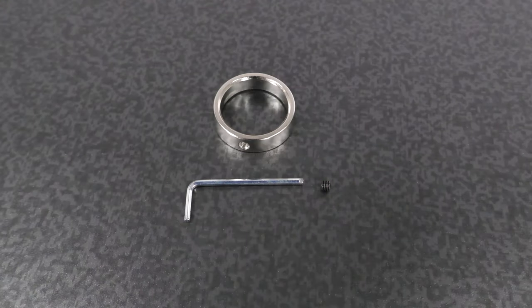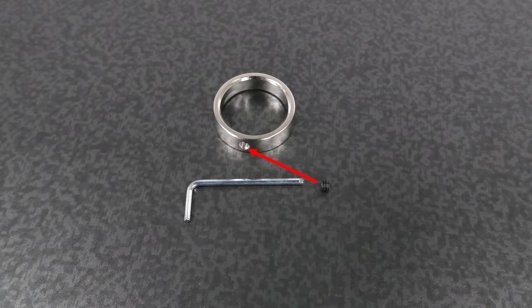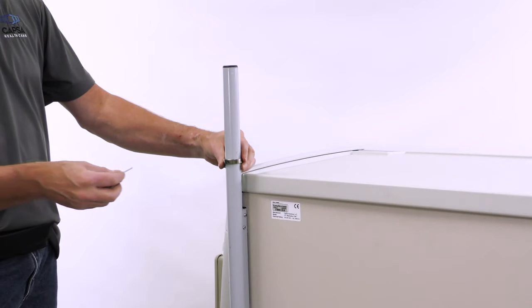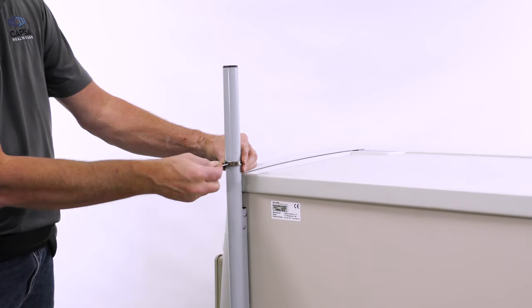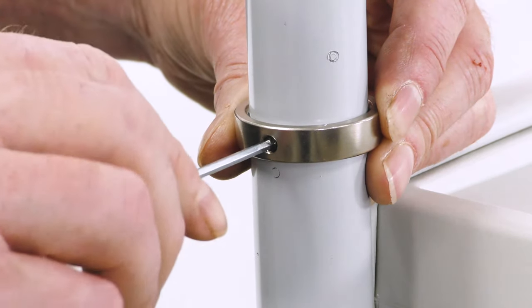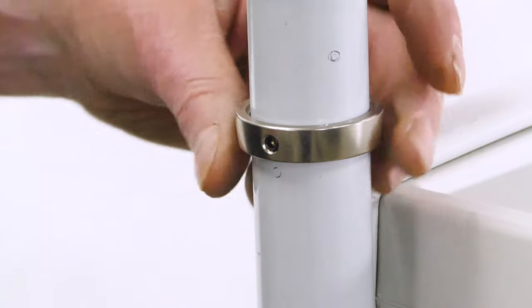Insert the set screw into the silver base collar using the included allen wrench. Slide the silver base collar over the post near work surface height, allowing enough room for the computer arm to pivot. Tighten the allen screw. Do not over torque.